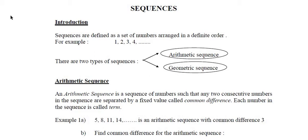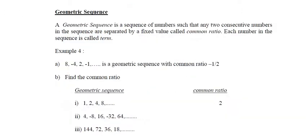Now let's discuss the second type of sequence, which is geometric sequence. A geometric sequence is a sequence of numbers such that any two consecutive numbers in the sequence are separated by a fixed value called the common ratio.